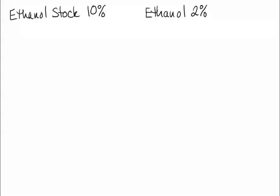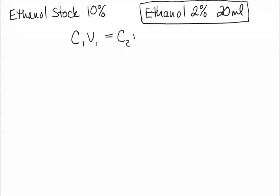For the experiment, you know that you need 20 milliliters of this 2% ethanol solution. You can take your 10% ethanol stock and use some of that to make your 2% ethanol solution. How do you go about doing this? Here's where your equation C1 times V1 equals C2 times V2 comes in really handy.